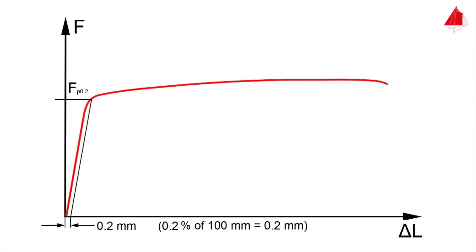The force at the intersection point of the offset line with the force-elongation diagram is designated as Fp0.2. This is the force that causes a plastic strain of 0.2 percent. The 0.2 percent proof strength Rp0.2 is equal to Fp0.2 divided by the original cross-sectional area S0.